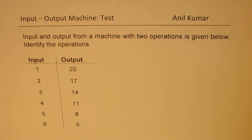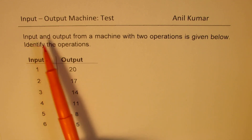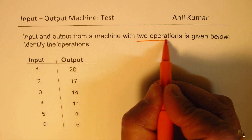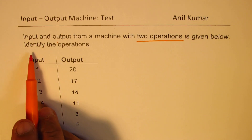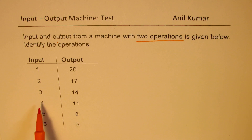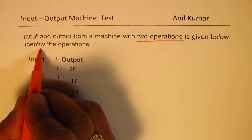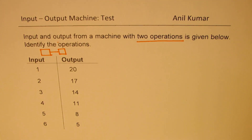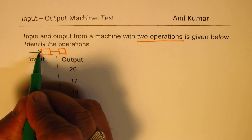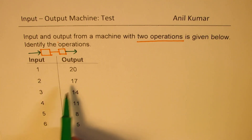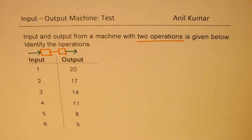The question basically is: input and output from a machine with two operations. We are performing two operations — the input is given and so is the output. For every input we are given some output, and you need to figure out what the two operations are so that we get the required output. For example, input 1 should give 22, input 2 should give 17, input 3 should give 14, and so on.